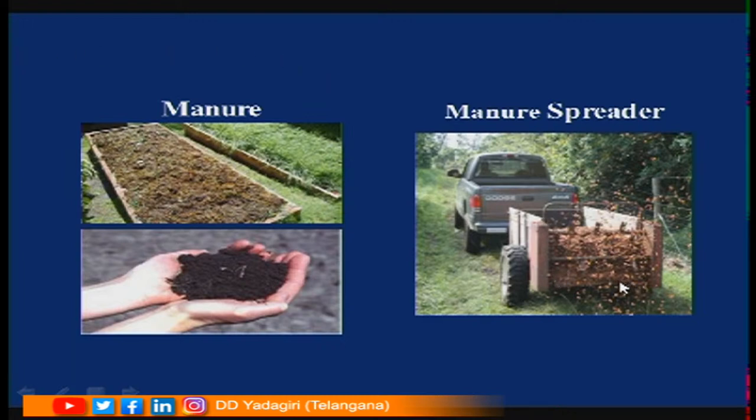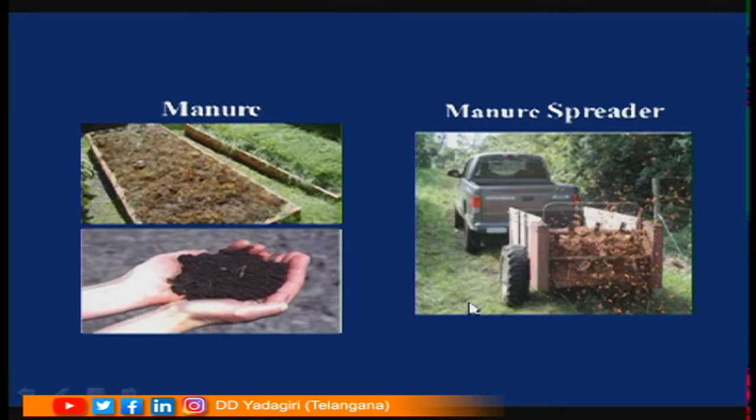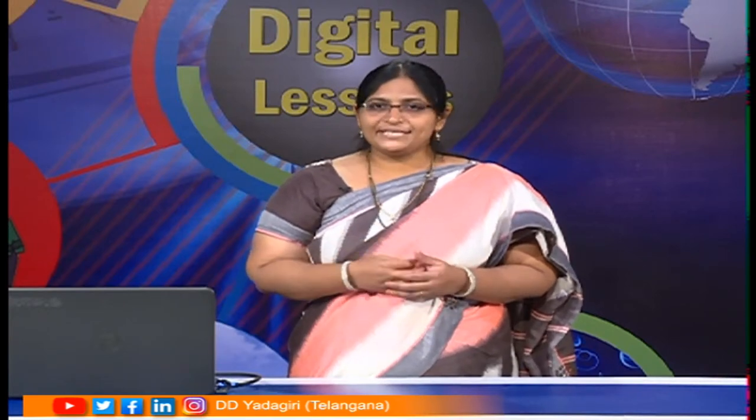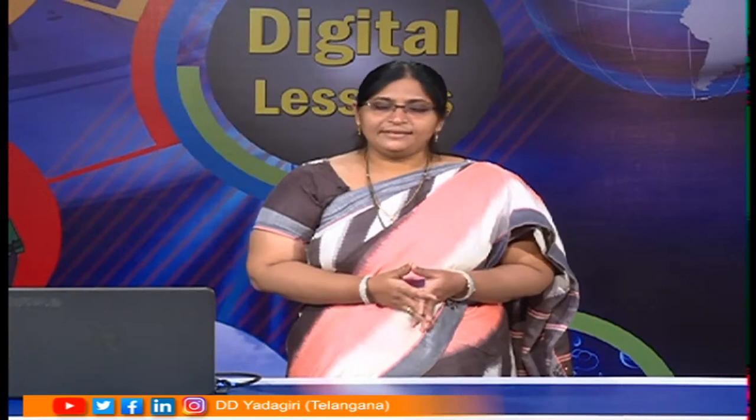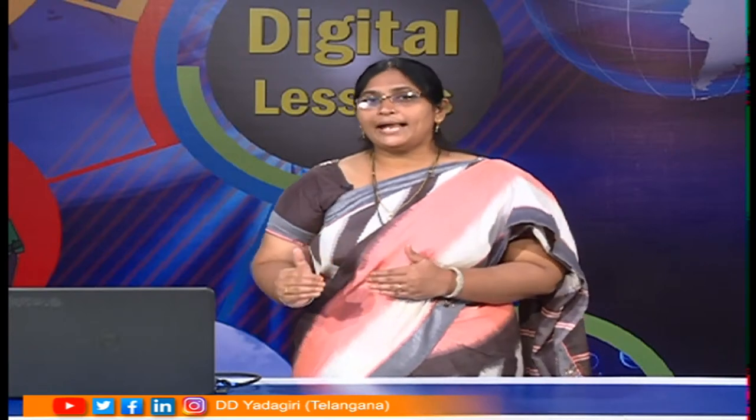You might have seen in villages — vegetable peels, waste food — all that is dumped in one place, left for some days, then mixed and put to the plants. This is called compost. Compost and manures are organic methods. Apart from organic, there are inorganic fertilizers such as urea, single super phosphate, and muriate of potash. However, these are not ideal as they make the soil acidic or alkaline, causing problems in future. That is why organic manure is better than inorganic fertilizers.